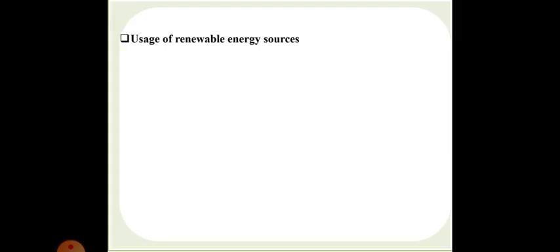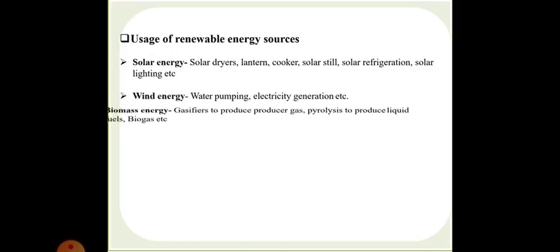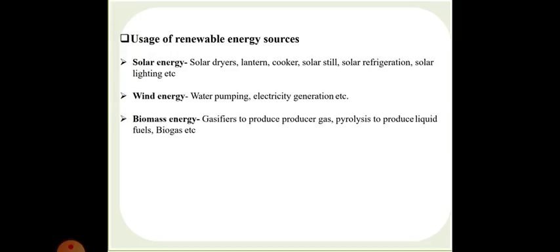Now we will be talking about the uses of renewable energy sources. Solar energy is used as solar dryers, lanterns, cookers, solar stills, solar refrigeration, solar lightings. Wind energy is used for water pumping, electricity generation. Biomass energy is used by gasifiers to produce producer gas, pyrolysis to produce liquid fuels and biogases. Tidal energy is basically used for electricity generation. The upward and downward movements of the tides are basically termed to be the tidal energies. Then is the geothermal energy, the energy which we are obtaining from the land by the geographical thermal power stations. Heat and electricity production is done by this.